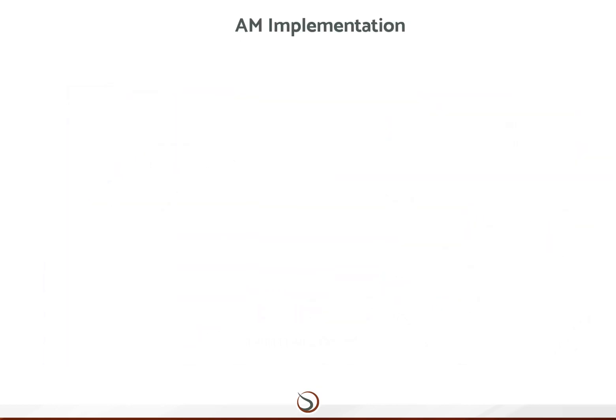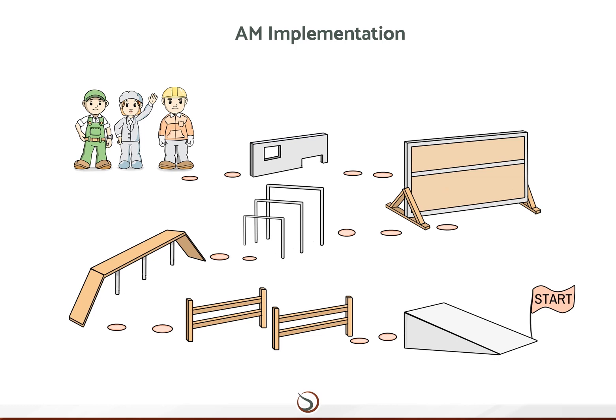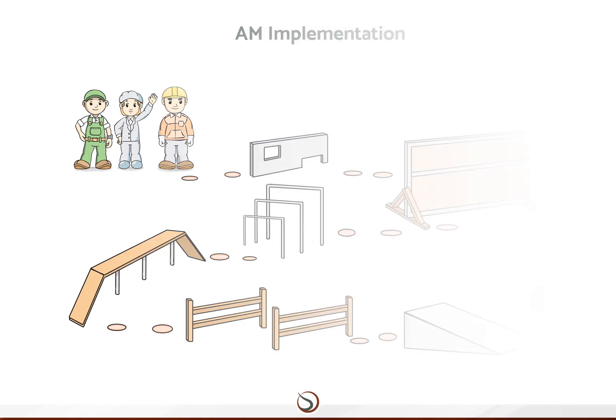This step-by-step approach clearly delineates each phase of the activities, allows for regular audits that secure the gains made at each step, and gives operators a sense of achievement as they proceed through the program. Spelling out the aims of each step in equipment and human terms, together with the kind of guidance managers are expected to provide, clarifies the purpose of the activities.